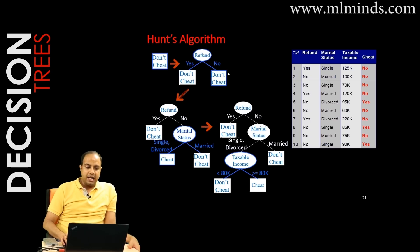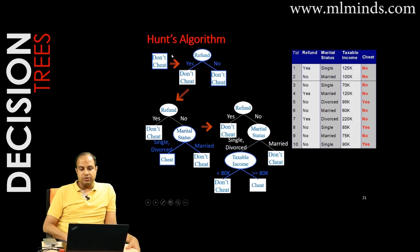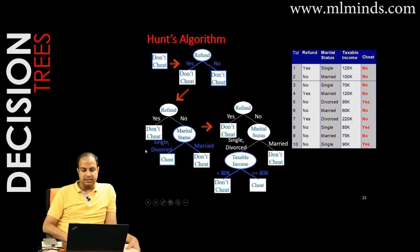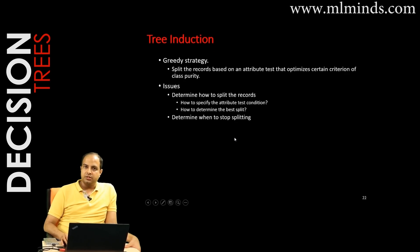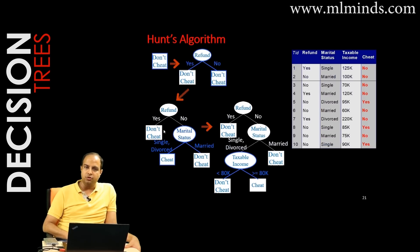That's the basic structure of Hunt's algorithm. But there are many open questions: why choose 'refund' at the top? Why group 'single and divorced' together? Why split on taxable income at 80,000 — why not 75k or 100k? We'll answer all of these one by one in the next videos, where we'll also cover how to choose attributes and determine split boundaries.